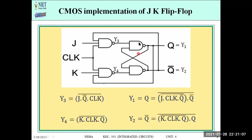Now y3 and y4 go as inputs into the NAND latch. y1 is the NAND of y3 and Q̄ (the second input, which is the feedback Q̄). So y1 = overline{y3 · Q̄}. Substituting y3: y1 = overline{overline{J · Q̄ · clock} · Q̄}. This gives us our y1 expression. Similarly, y2 = NAND(y4, Q) = overline{y4 · Q}. Substituting y4: y2 = overline{overline{K · clock · Q} · Q}.